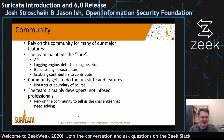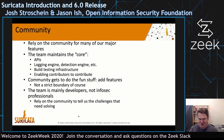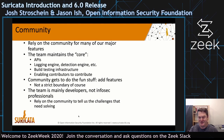We did mention community a lot — we think it's worthwhile noting that we rely on the community for many of our major features. The team maintains the core APIs, logging engine, detection engine, and build infrastructure. We try to enable contributors to contribute — the community gets to do the fun stuff like adding features. We also rely on the community for information on the InfoSec world, as we are mainly developers, not InfoSec professionals. We need people like you to tell us the challenges that need to be solved.